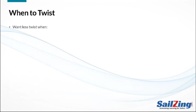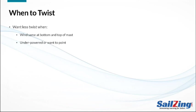By contrast, you want less twist for the opposite reasons. You don't need twist when the wind is the same direction and strength at the top and bottom of the mast — this is usually the case when you see ripples on the surface of the water. If you're underpowered, you want the whole sail powered up, meaning minimizing twist so the angle of attack is correct in all parts of the sail. You also need full power for pointing. In flat water, you don't have to worry about changes in apparent wind at the top of the mast due to the mast pitching.